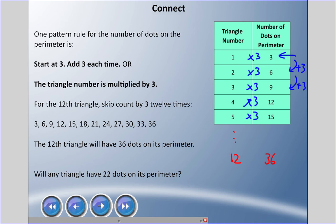Do you think any triangle will have twenty-two dots on its perimeter? The answer is no, for two reasons. I already gave you all the numbers and twenty-two wasn't there - twenty-one's the closest. And you can't multiply anything or skip count anything by three to get twenty-two, so it's impossible.